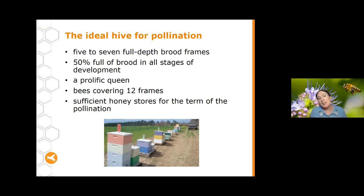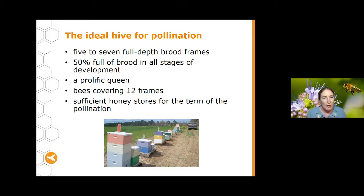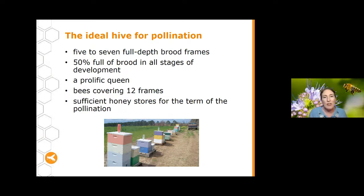Ideally, if you're going to take hives to pollination, you want hives with five to seven full-depth frames of brood, with around 50% of frames at all different stages of development. Make sure you've got a prolific young queen who's laying lots, bees covering around twelve frames, and sufficient honey stores for the entire pollination period. So make sure they're really strong hives.